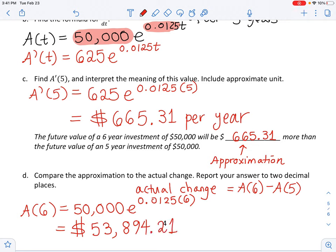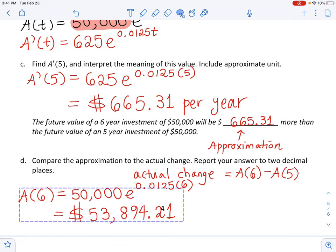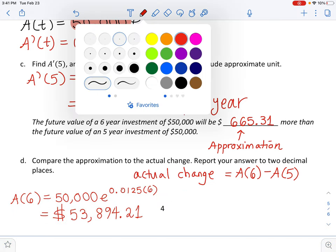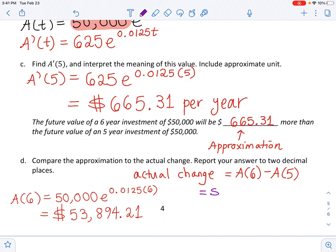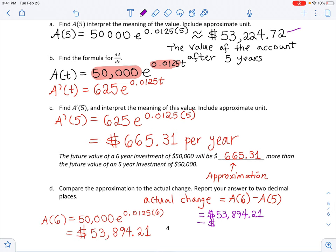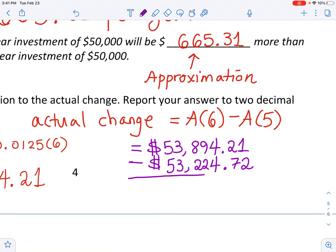Okay? So if I want to find the actual change, I will need to do this number minus A of 5. So let me put this over here. So the actual change is $53,894.21 minus what was the amount? Can I zoom out and go to the first problem? Like this amount right here. We're subtracting A of 5. And A of 5 was $53,224.72.